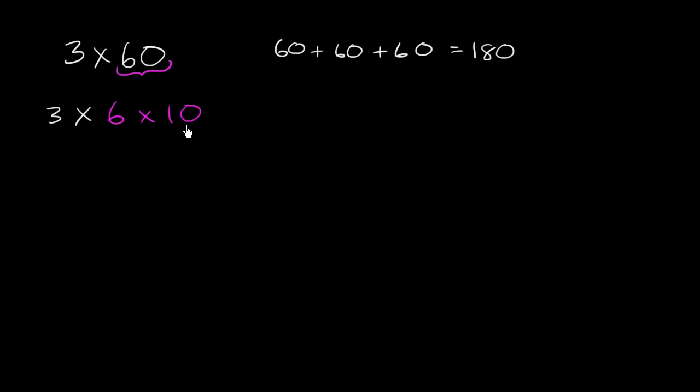And when you're multiplying three numbers like this, it doesn't matter what order you multiply them in. So we can multiply the 3 times 6 first and get 18, and then multiply that times 10. And 18 times 10 is just going to be 180. It's going to be 18 with another 0. So this is going to be 180.